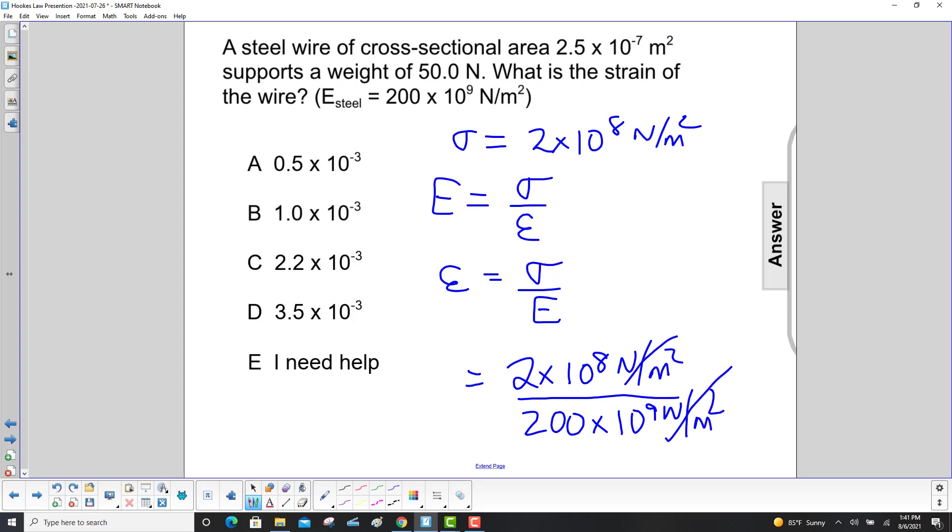Units cancel out, which is good. Carry out the math and you get B. And frankly, if you're just looking at the answers there, the multiple choice answers,